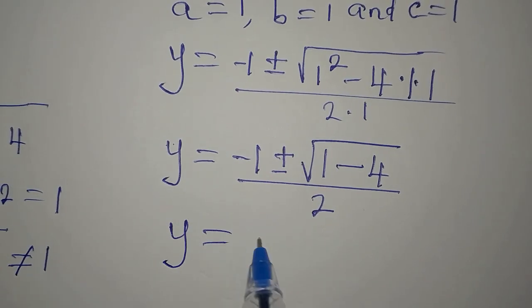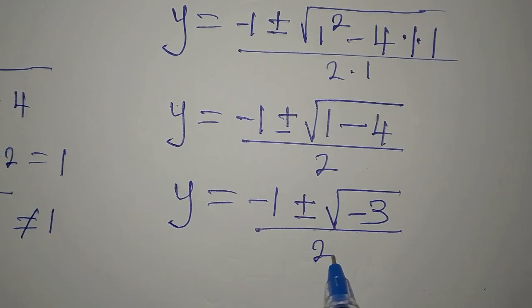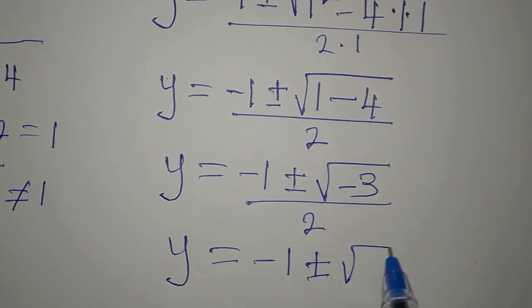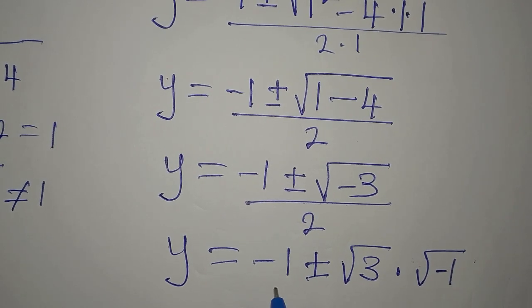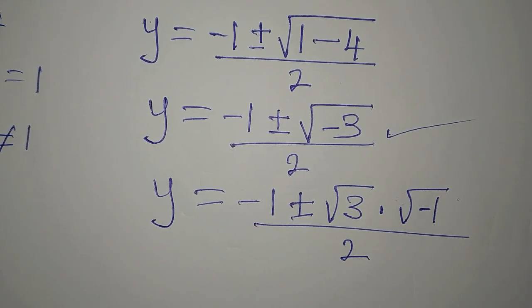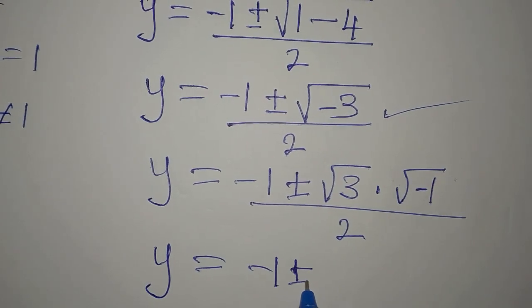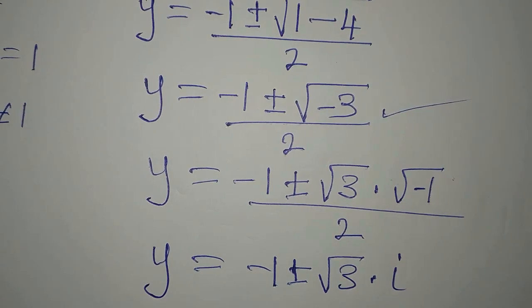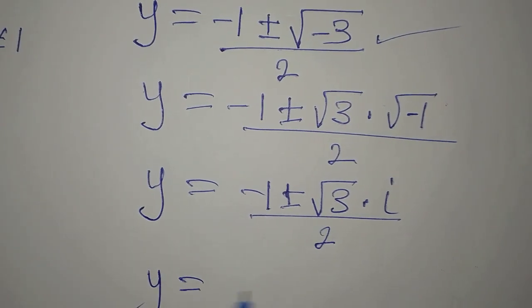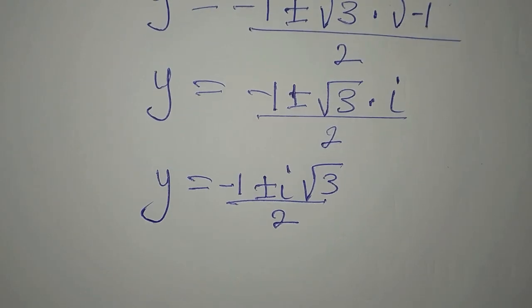Applying this correctly: y equals minus 1 plus or minus the square root of negative 3, divided by 2. Now square root of negative 3 equals square root of 3 times square root of negative 1. Since square root of negative 1 is i, we write this as i root 3. So y equals minus 1 plus or minus i root 3, divided by 2.